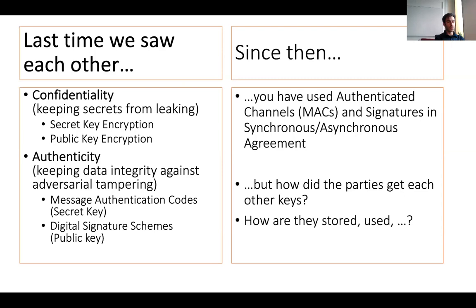One important issue that has not been discussed in any of this context — but you were told it would come — is: how do parties get each other's keys? This is a very important problem. It has been said that cryptography is a tool to turn any problem into a key management problem, because having encryption or signatures doesn't immediately solve all your problems unless you can deal keys to the parties, make sure you know which keys belong to which individuals, and keep these keys away from the adversary.